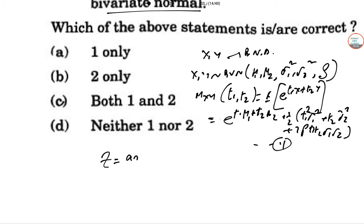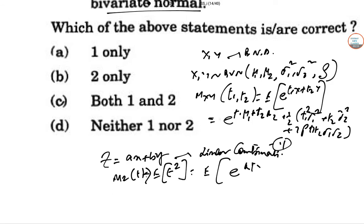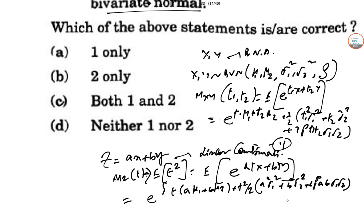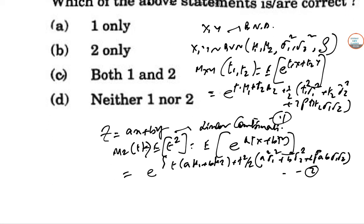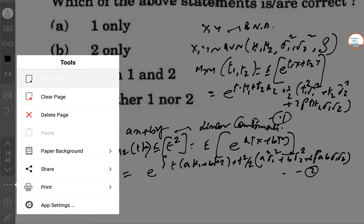Now, let Z equal to AX plus DY. So this is a linear combination. So M2 of T is E to the power T2. This is expectation of A TX plus B T Y. So this is E to the power T A mu 1, B mu 2 plus T square by 2. And in the other part, T square by 2, A square sigma 1 square, B square sigma 2 square, 2 rho, A, B, sigma 1, sigma 2. So this is maybe equation number 2.